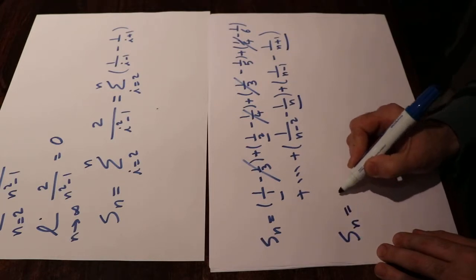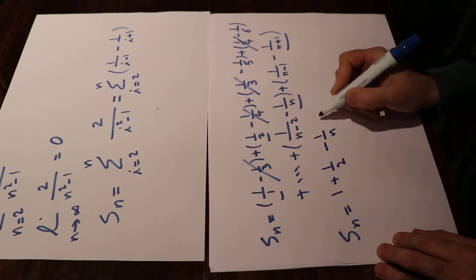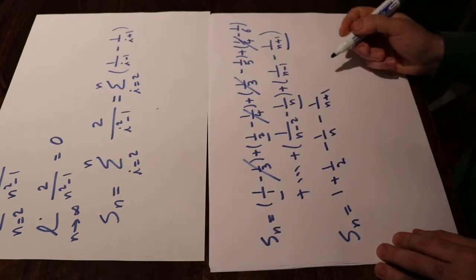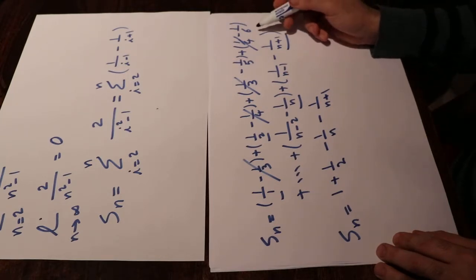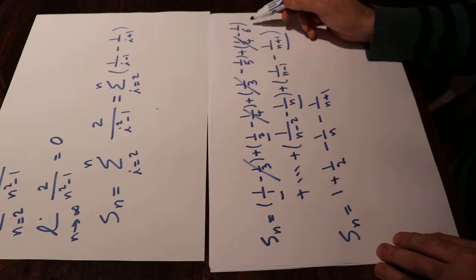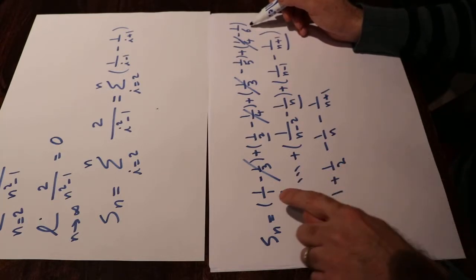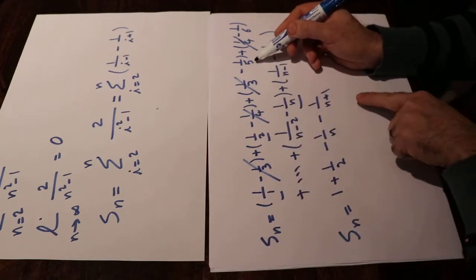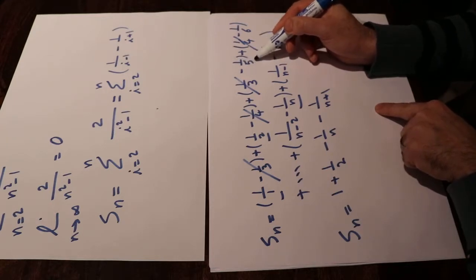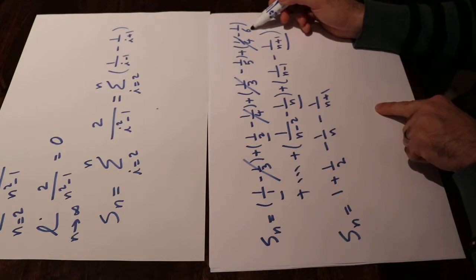So Sₙ will be equal to 1 plus 1/2 minus 1/n minus 1/(n+1). As a hint, suppose n was equal to 5: you would have 1 plus 1/2, with everything cancelled except 1/5 and 1/6. You can extrapolate that to the general case of n.